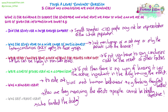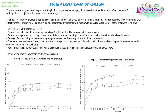So let's have a look at a question now — we'll do one together and I'll show you what I mean. Diabetic retinopathy is caused by persistent high blood sugar levels damaging blood vessels that feed the retina. One treatment for retinopathy is to inject medication directly into the eye. Scientists recently conducted a randomised blind clinical trial of three different drug treatments for retinopathy, comparing their effectiveness at improving visual acuity in diabetic retinopathy patients with medium to high vision loss.